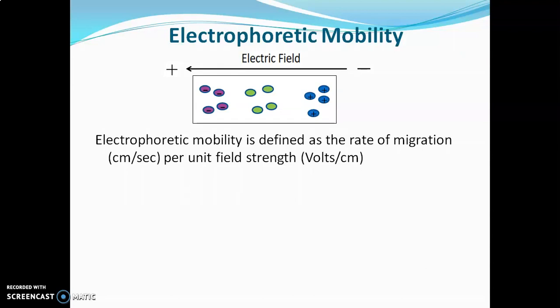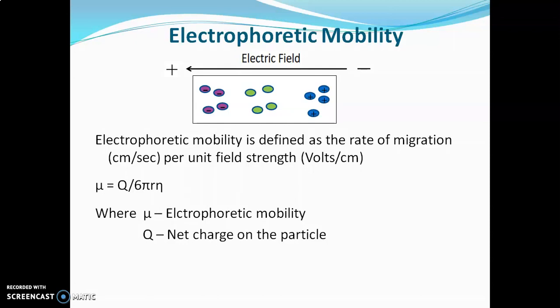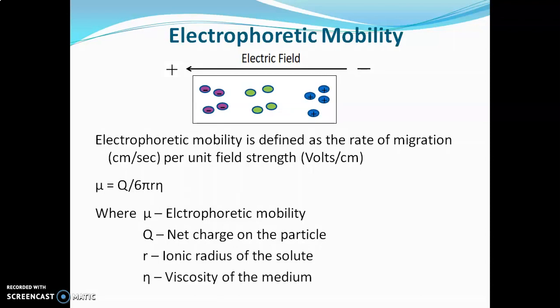Rate of migration is measured in cm per second and field strength is measured in volts per cm. It is given by the formula: mu is equal to q upon 6 pi r n, where mu is electrophoretic mobility, q is net charge on the particle, r is ionic radius of solute, and n is viscosity of medium. By observing this formula, the overall sample characteristics and system characteristics are very important in electrophoresis.